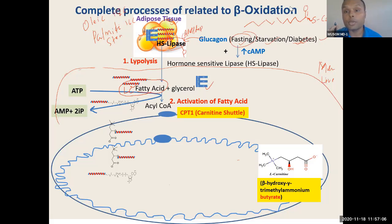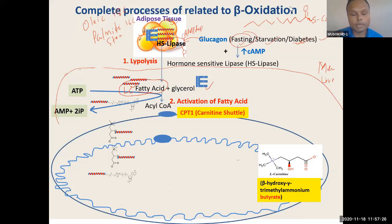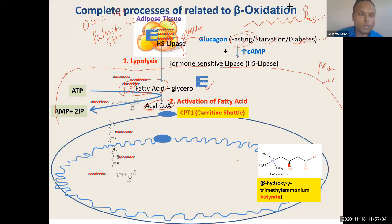Remember this very important concept. Acetyl-CoA is an active molecule. Malonyl-CoA is an active molecule. Succinyl-CoA is an active molecule. Fatty acyl-CoA is an active molecule. This is activation, and activation is not free — it requires energy. How much energy? Two high-energy phosphates.